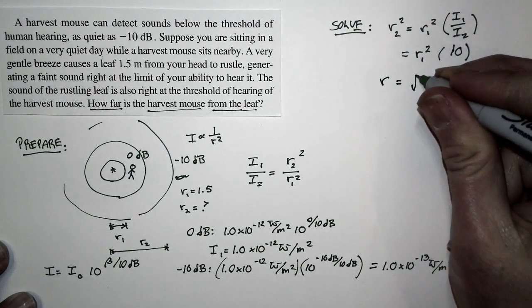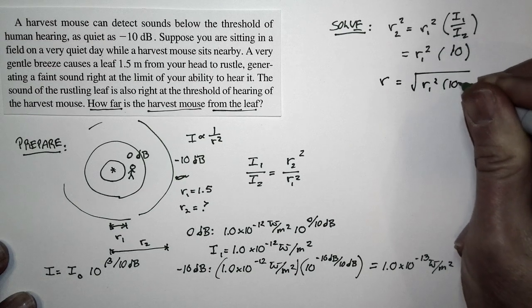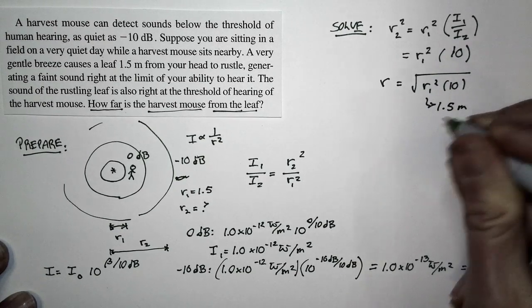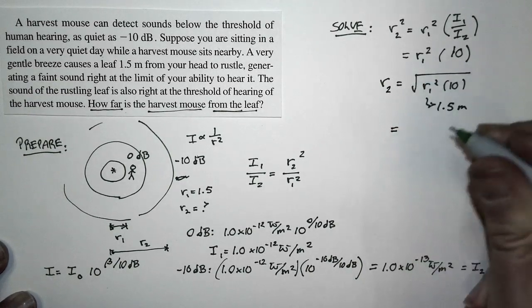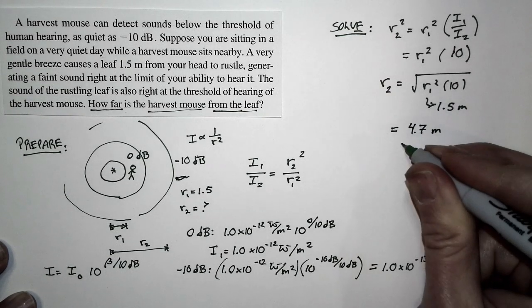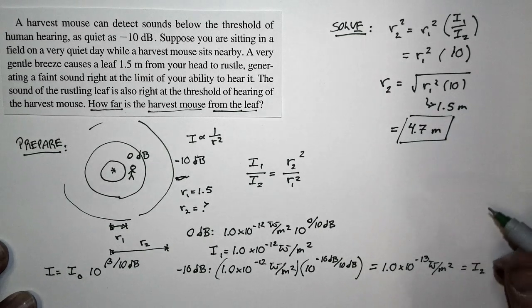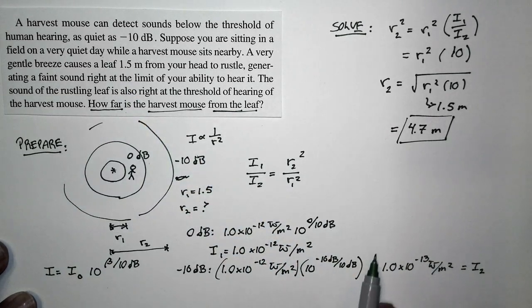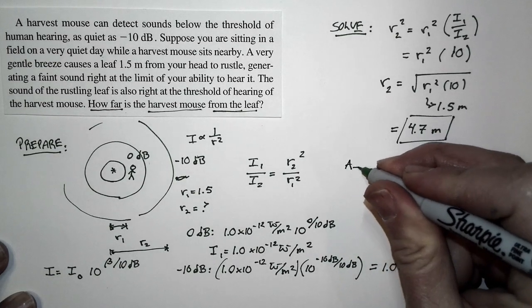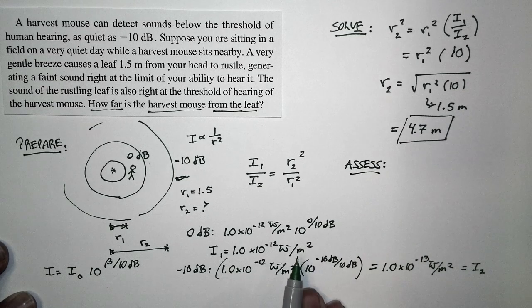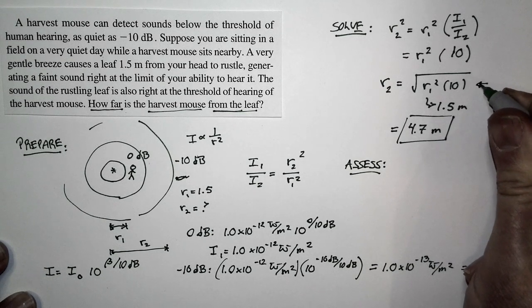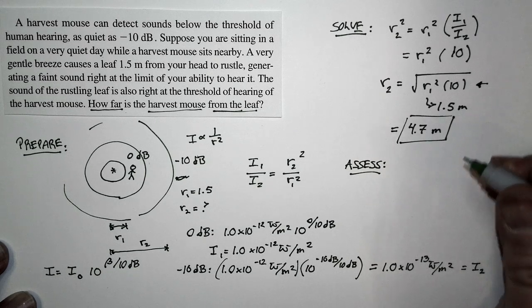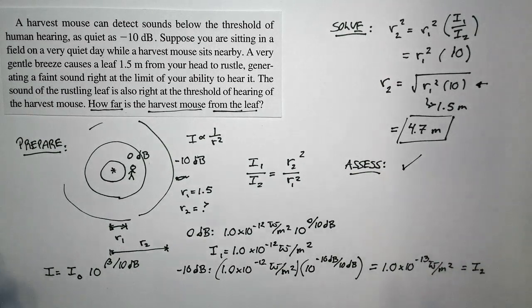R2 equals the square root of R1 squared times 10. R1 is 1.5 meters, so R2 equals 4.7 meters — about 3 times as far away. The mouse can detect a sound from 4.7 meters, while you can detect it from 1.5 meters, because the mouse is sensitive to an intensity that's less by a factor of 10. It's sensitive to one tenth the intensity you are, so it can pick up sounds at a distance about the square root of 10 times as far away — approximately 3 times — which matches our understanding of how the world works.